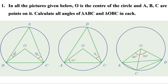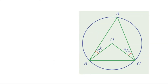Now let us do the problems on page 53. First problem: in all the pictures given below, O is the center of the circle and A, B, C are points on it. Calculate all angles of triangle ABC and triangle OBC in each. Let us take them one by one. For the first figure, let me join O and A. Triangle AOC is an isosceles triangle because OA and OC are radii of the circle.